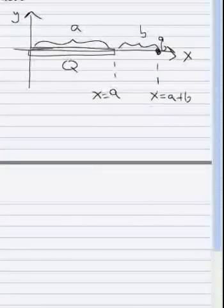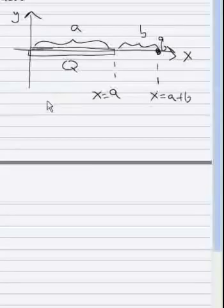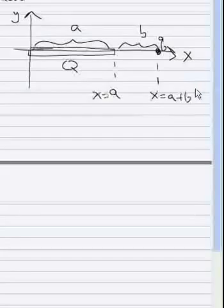In this problem, there's a positive charge Q distributed along the x-axis between 0 and A. We're going to find the electric field due to that charge distribution along the positive x-axis to the right of the charge distribution, and we're going to find the force between that charge distribution and a point charge located on the positive x-axis.